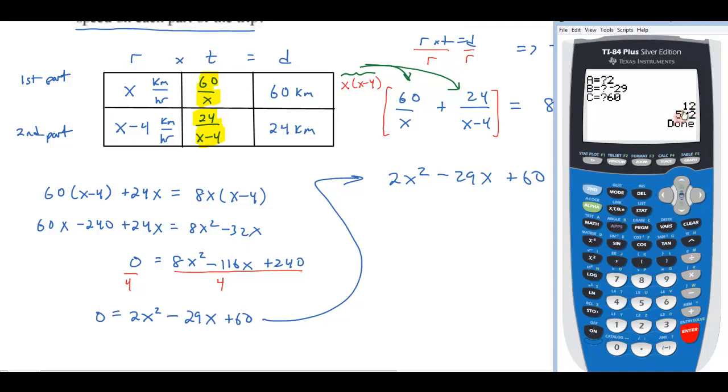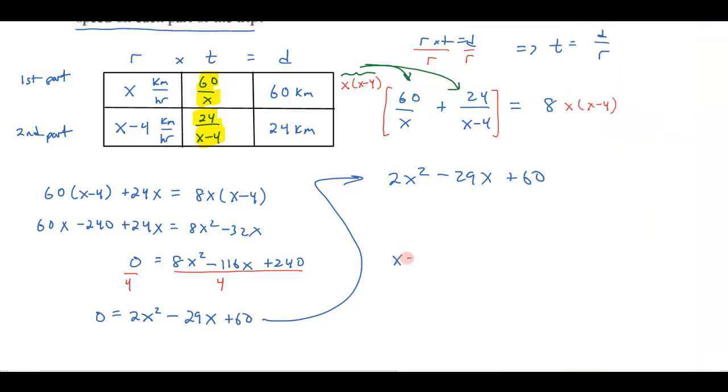And you'll see that I get solutions of 12 and 5 halves. Now, if those numbers are nice rational numbers, that tells you that you could have factored this. In fact, this will give us an idea how it factors. So for this problem, you could just say x equals 12 and x equals 5 halves by the quad program, if your teacher lets you do that. I do in my classes. Or, if you wanted to show how to factor it, then you could do it this way.